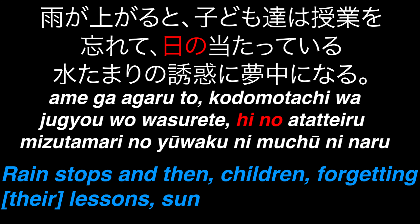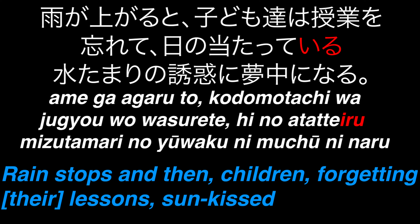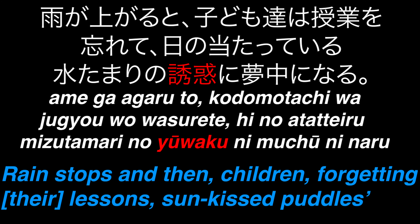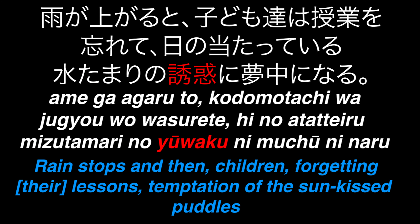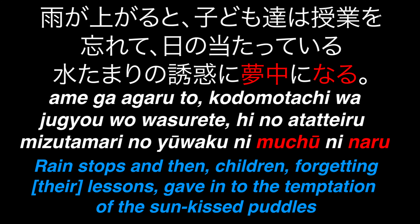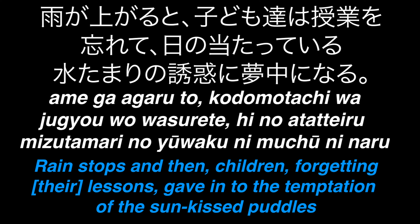Hi means sun, and no is a possessive particle. Ataru means to touch, to be stricken, or to face. It's in its te form, and adding on iru makes it a continuous action, an action that's ongoing. It can be translated as sun-faced or sun-touched. Mizutamari means a puddle, and again has the possessive particle no after it. Yuwaku means a temptation, so linking them together through the possessive particle, it means the puddle's temptation. Muchu means absorbed in, or forgetting oneself. And naru means to become, as in becoming absorbed in or giving in to. The particle ni means to, in terms of a direction or a state. So this clause can now be translated as: giving in to the temptation of the sun-faced puddles.